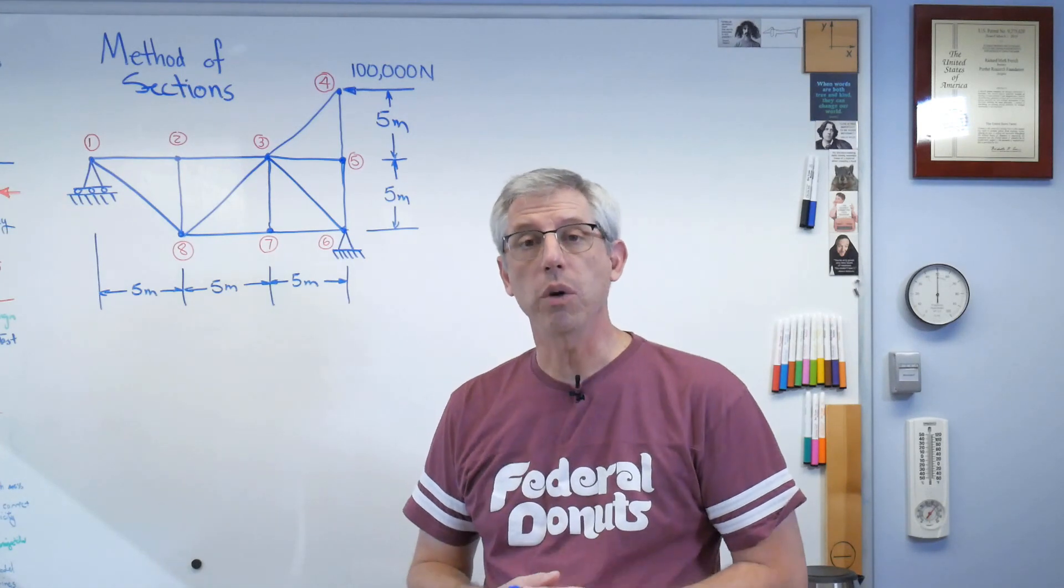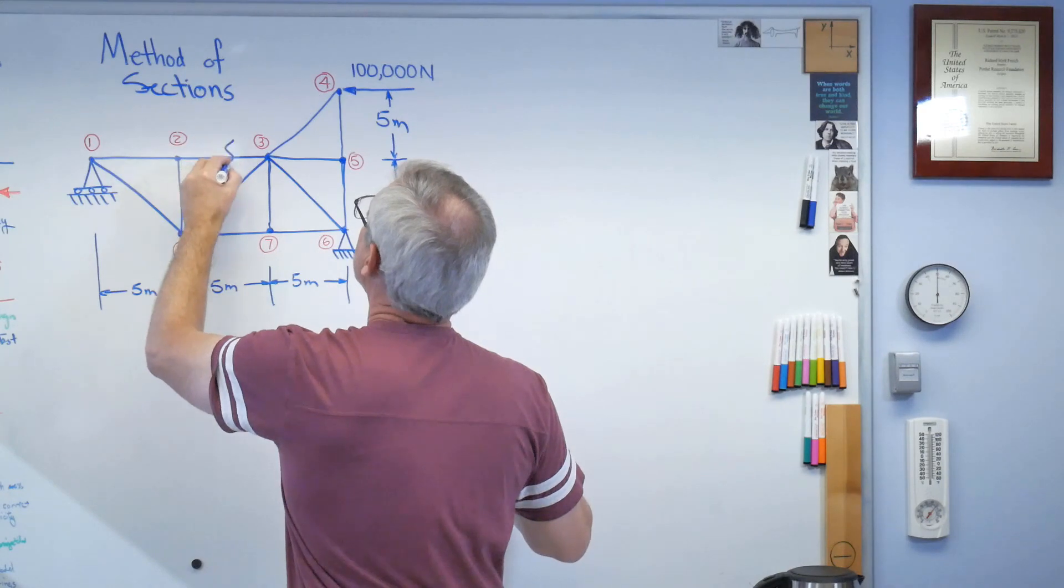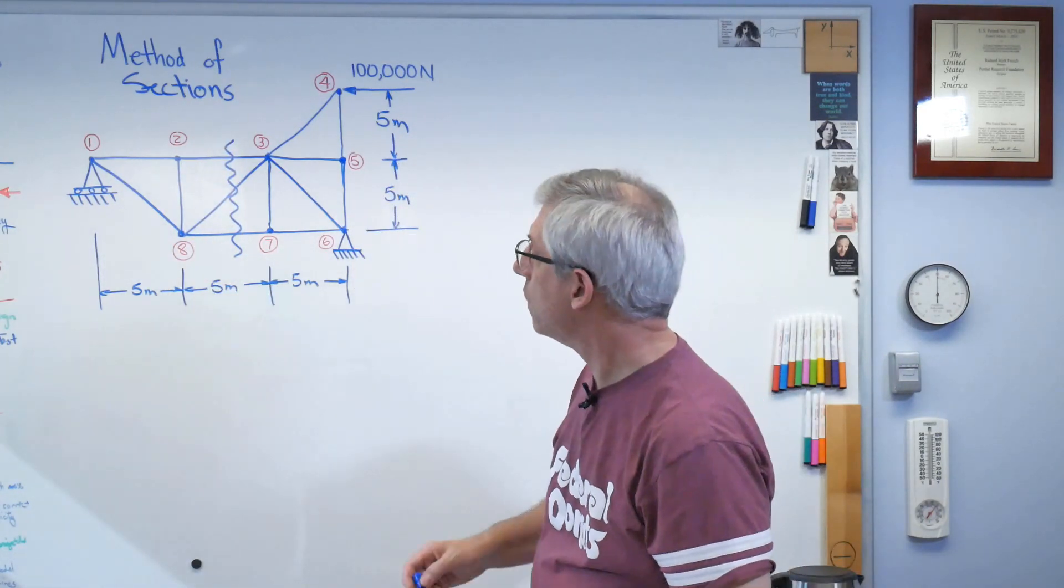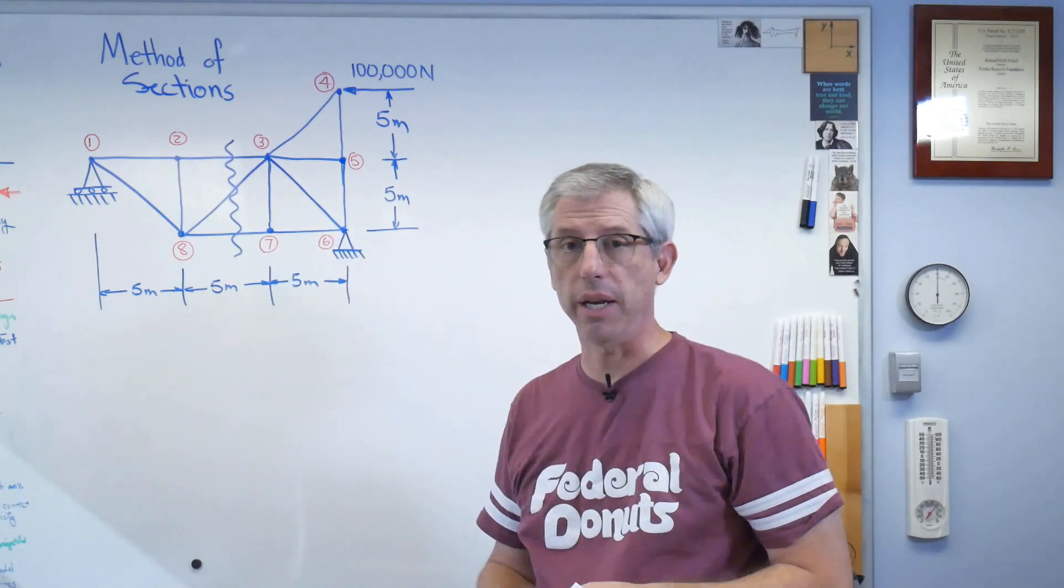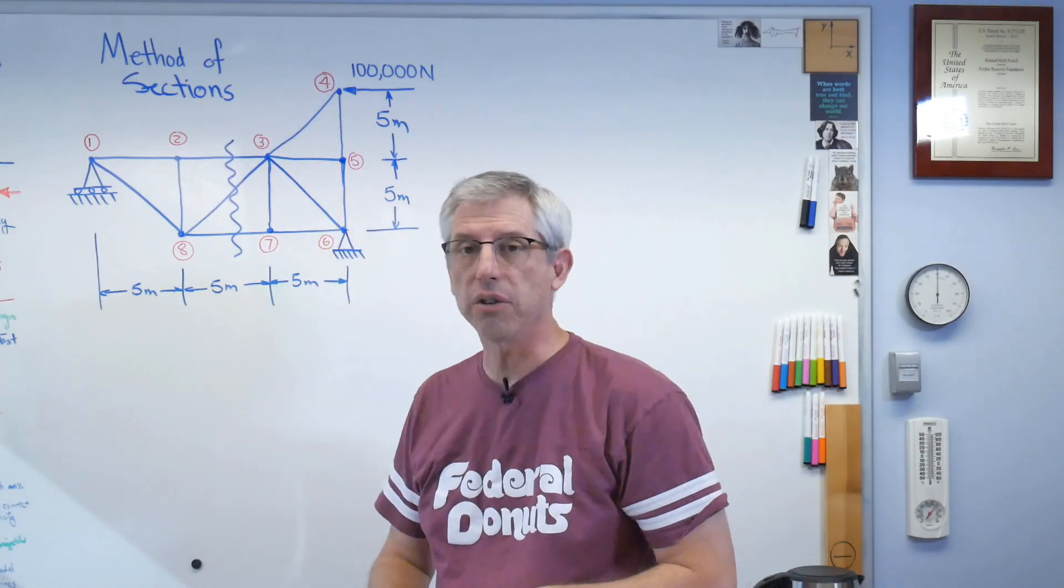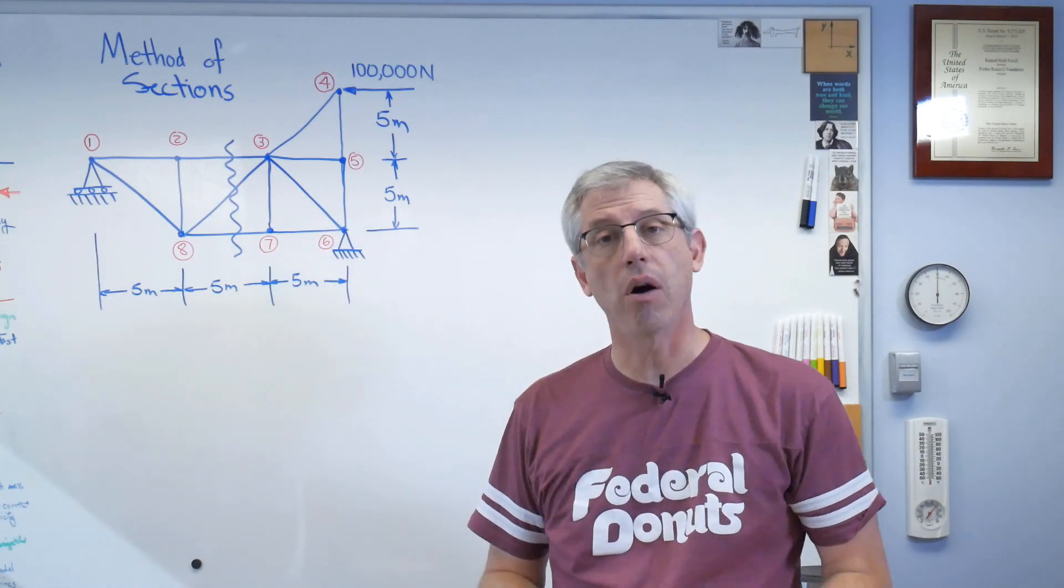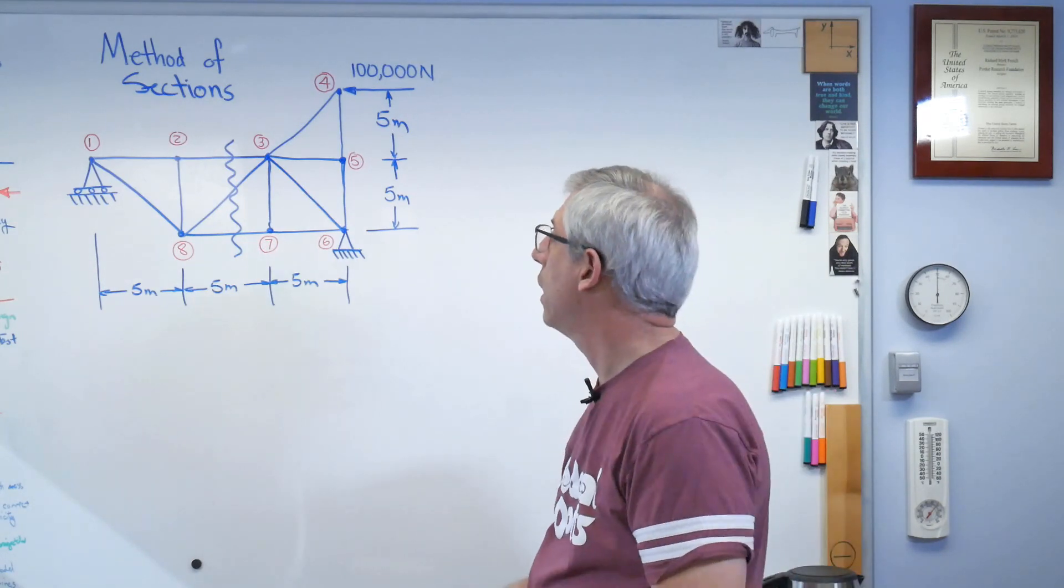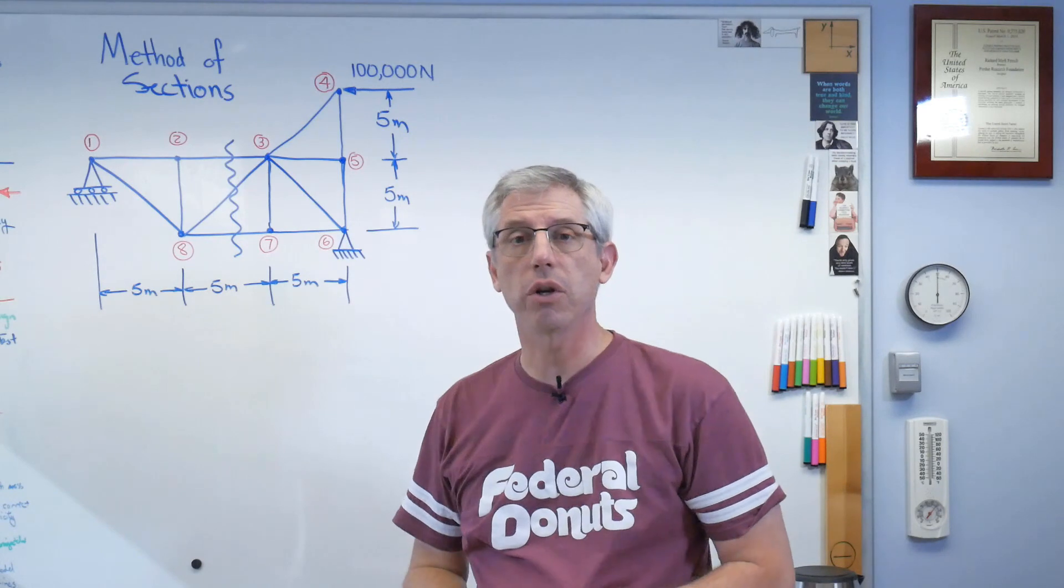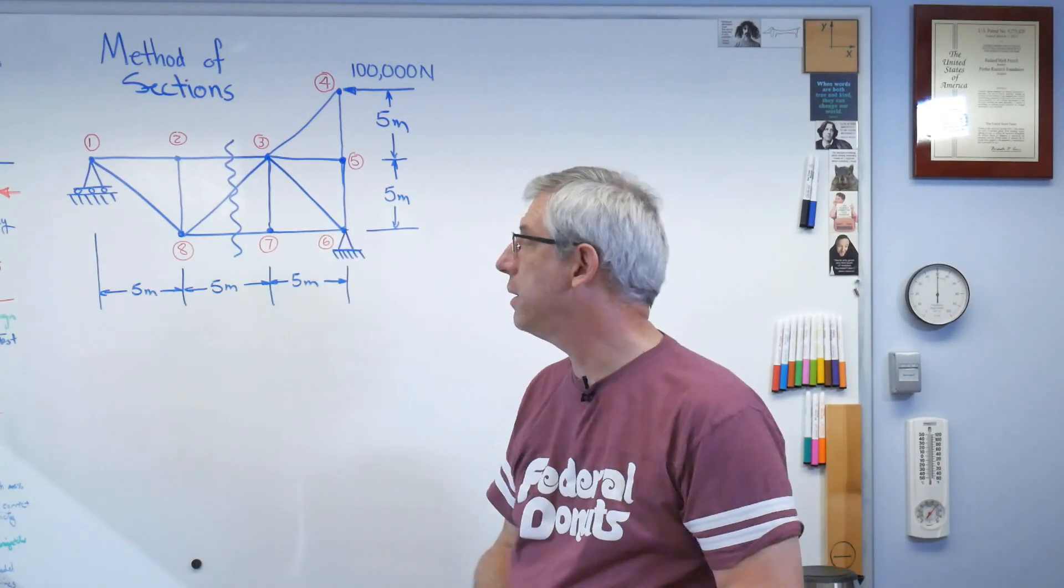Now, where would we want to know the forces? Let's make this line right here the one we care about. That's a fictitious cut. It isn't really there. We're not really sawing our structure. We're just drawing a line across there and we're going to draw one section of the truss that is cut at that line. We're going to look at the forces of the elements that cross that line. That's the method of sections.